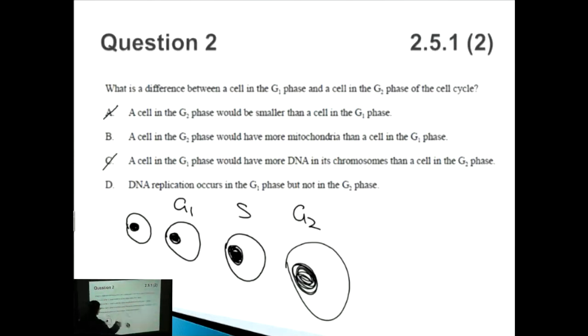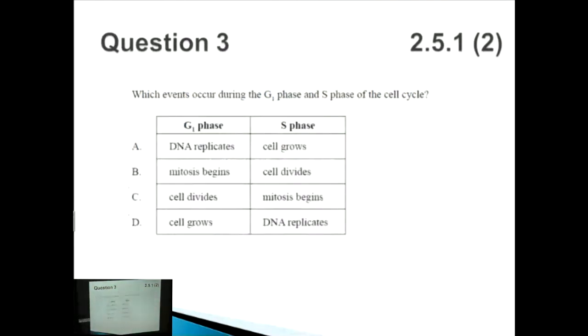This is wrong because during the S phase, which is between the G1 and G2, you have increasing DNA. So therefore G1 phase cells would have less DNA in its chromosomes. D, DNA replication occurs in the G1 phase but not in the G2 phase? Wrong again, because it's the S phase which DNA replication occurs in. Therefore the answer is B.